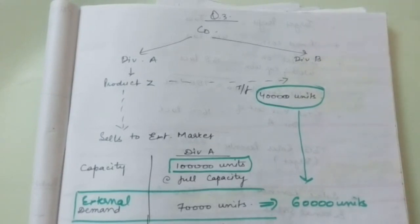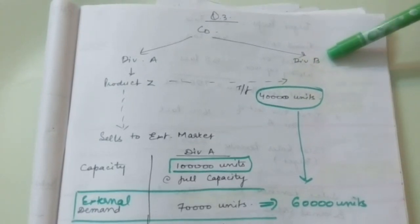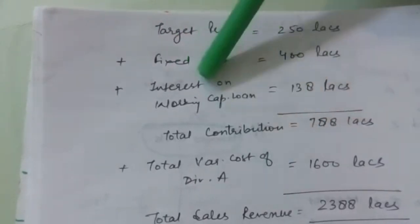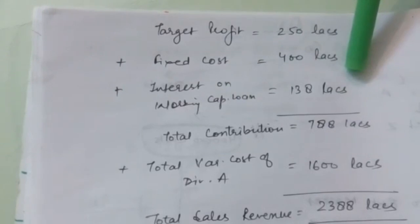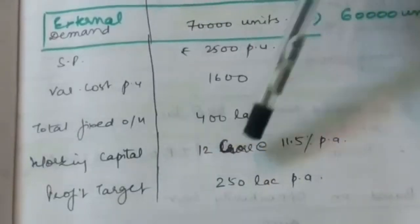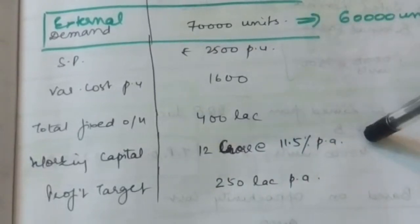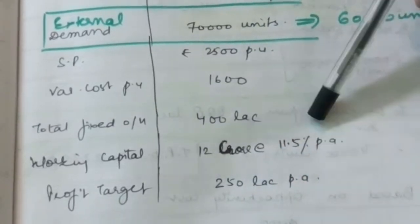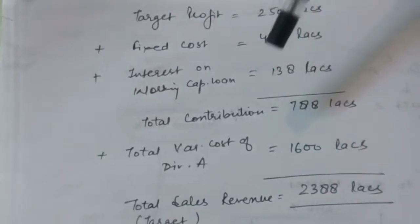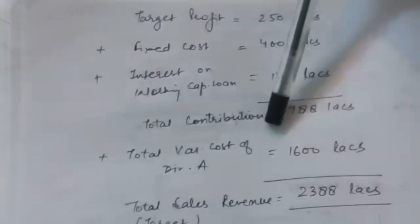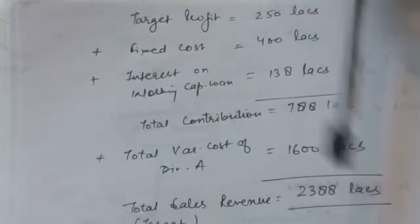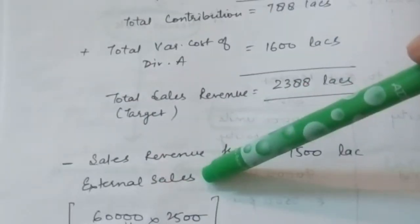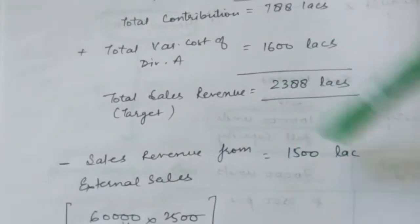Now let's start the calculation. Target profit is $250 lakhs. Add fixed cost and add interest on working capital. Working capital is $12,000 at 11.5% per annum. So total contribution required comes to $78,000,000. Variable cost is also added for Division A to get total sales revenue. External sales: Division A sells 60,000 units at $25,000 each, which will be realized. The remainder charged to Division B as transfer price will be $88,000,000 divided by 40,000 units, giving a transfer price of $22,000 per unit.